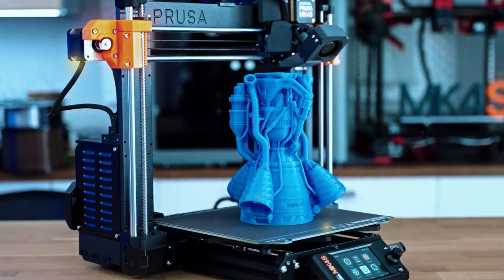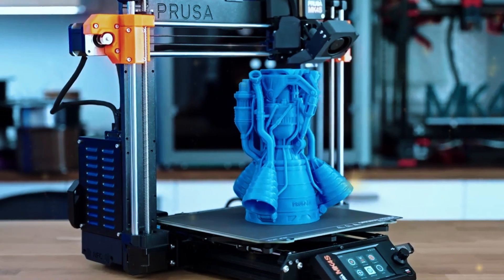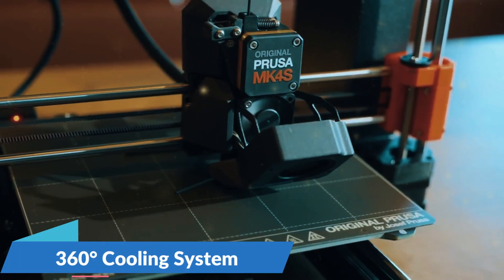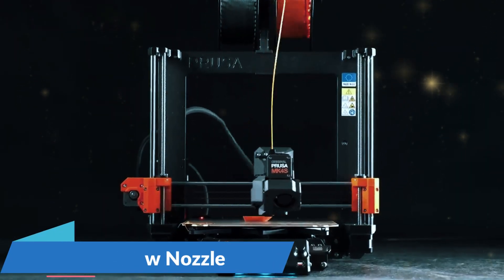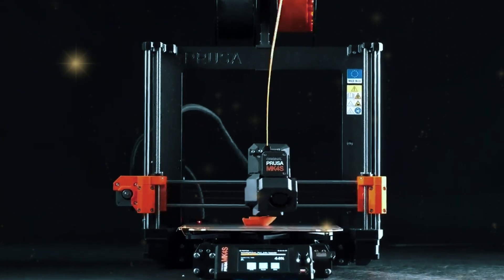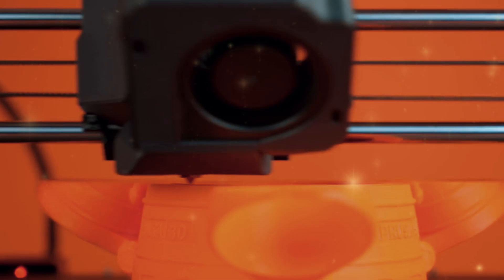The 360-degree cooling system and high-flow nozzle also contribute to consistent high-speed performance, making the MK4S one of the fastest desktop 3D printers available today.